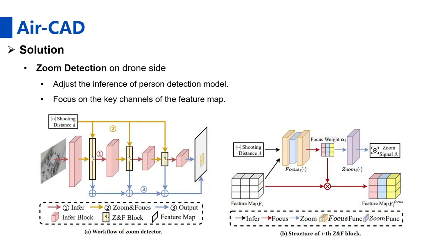To improve crowd anomaly detection accuracy, we designed the zoom detector in ALCAD, which could dynamically adjust the inference of the person detection model and focus on the key channels of the feature map based on the drone's shooting distance.